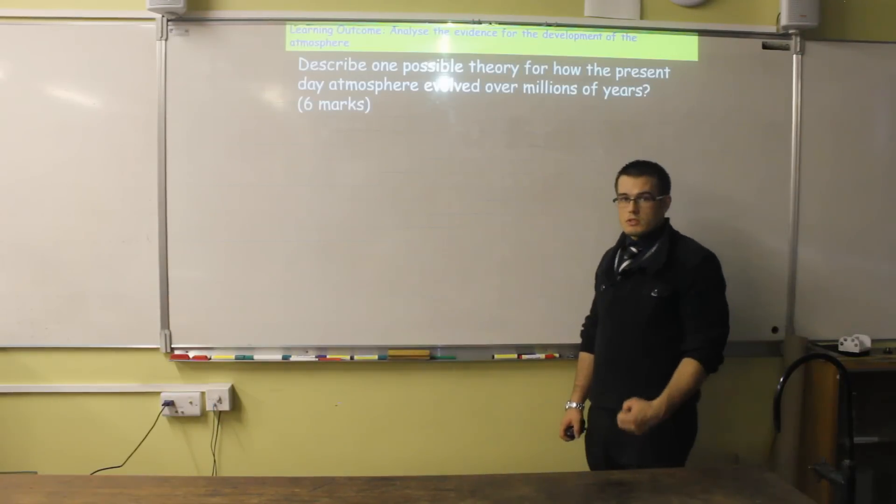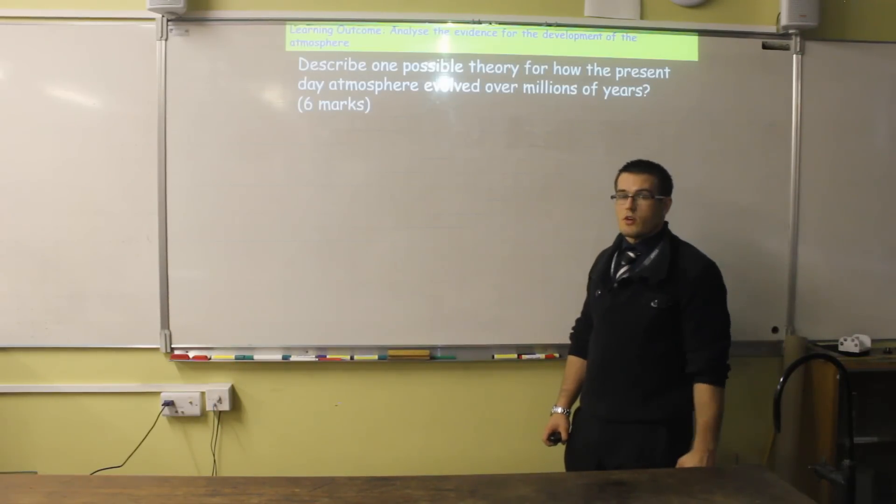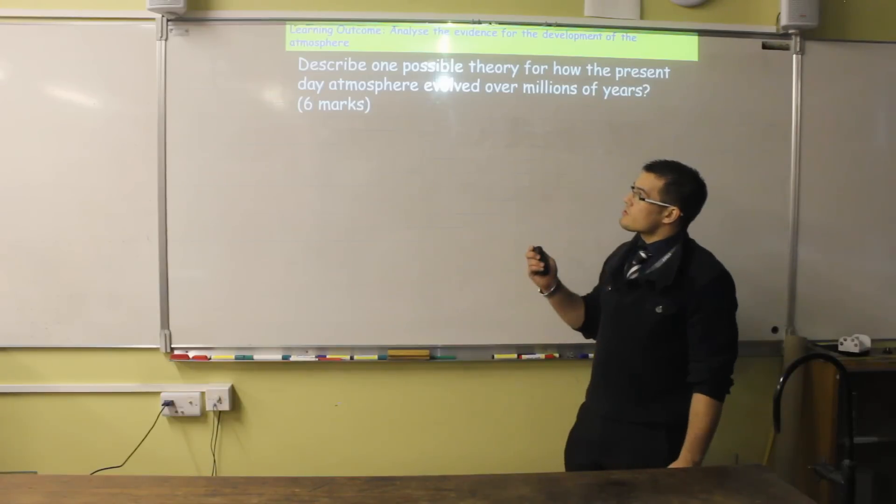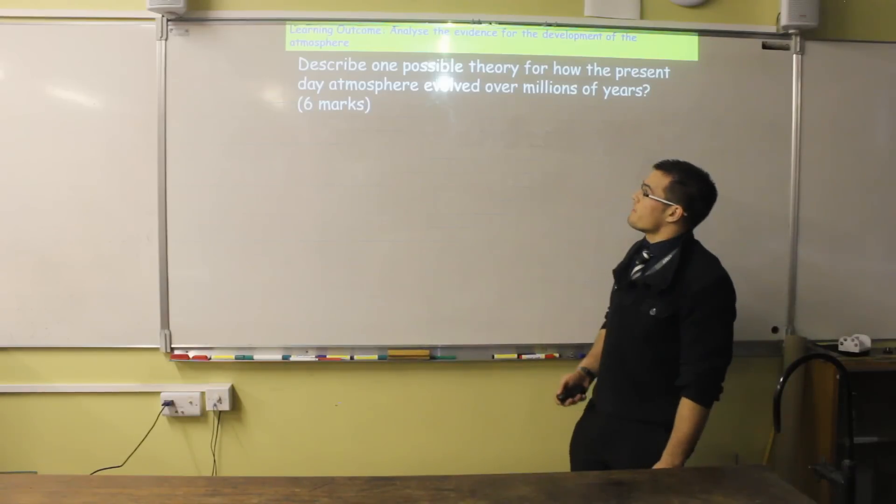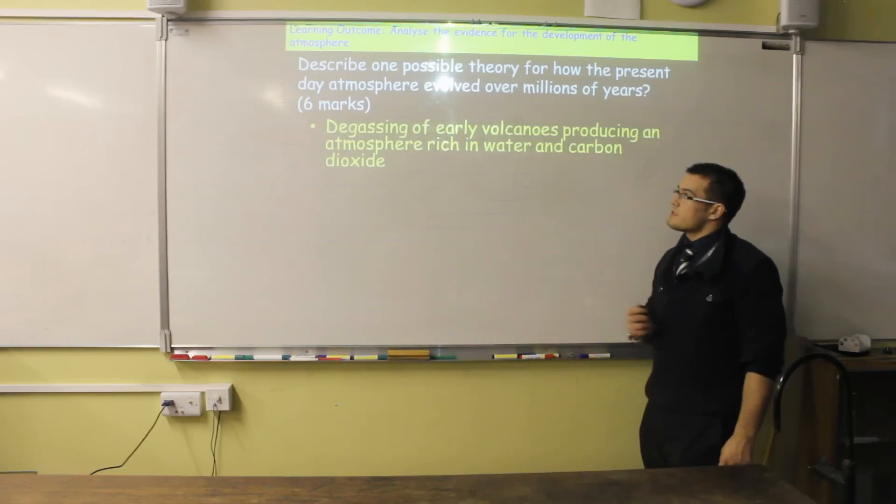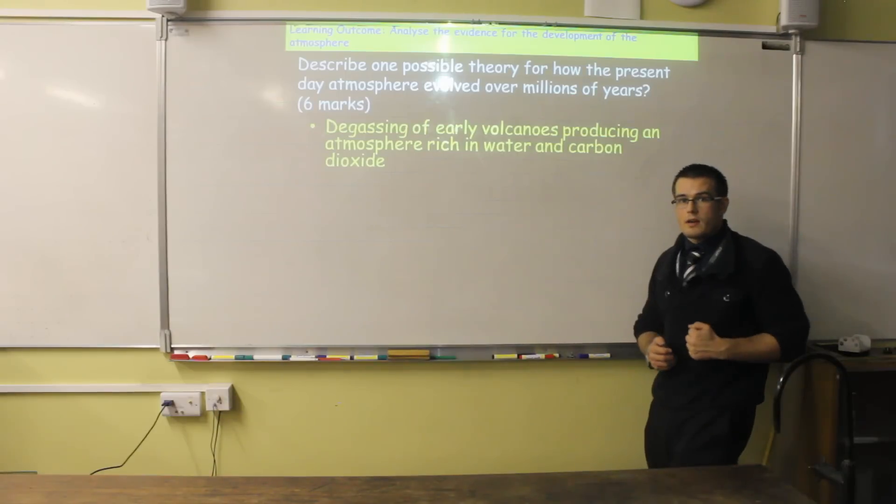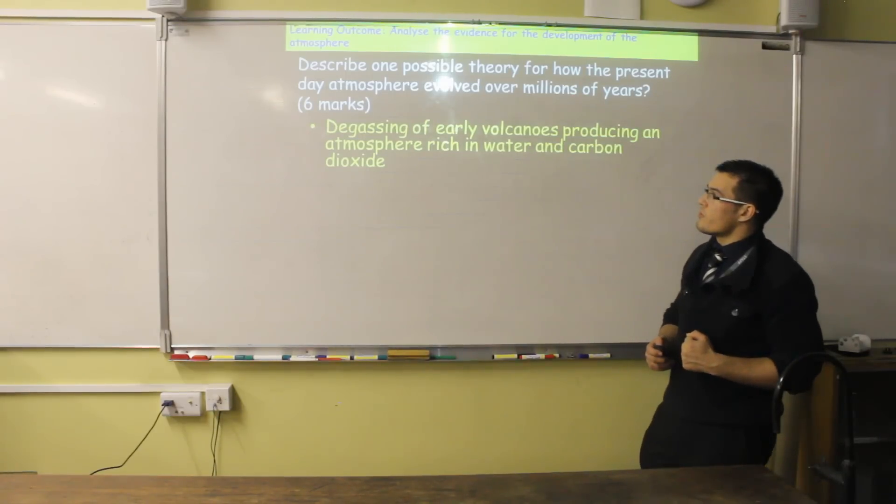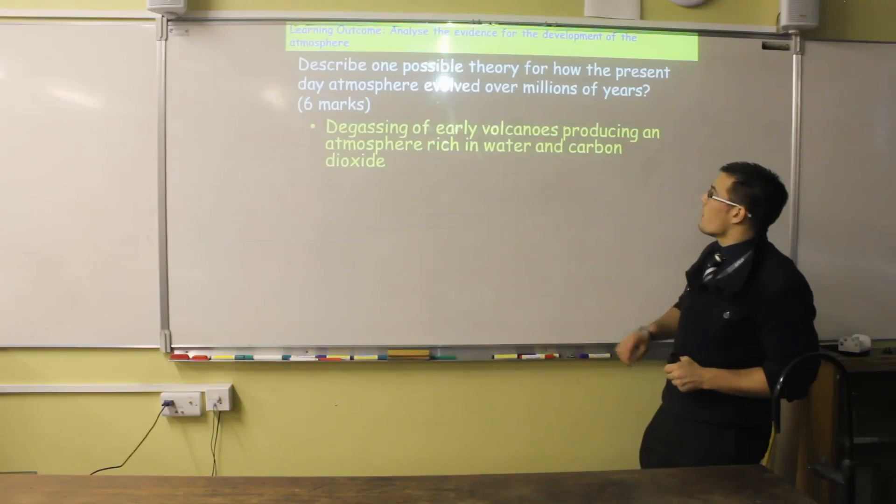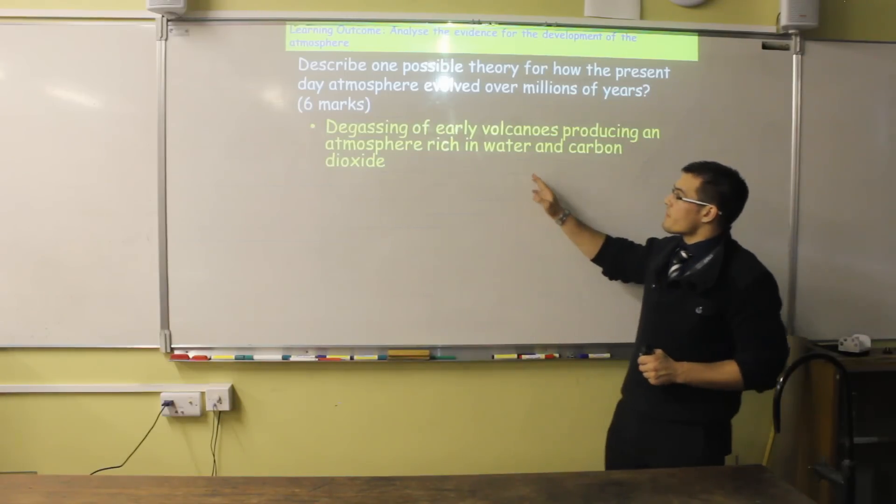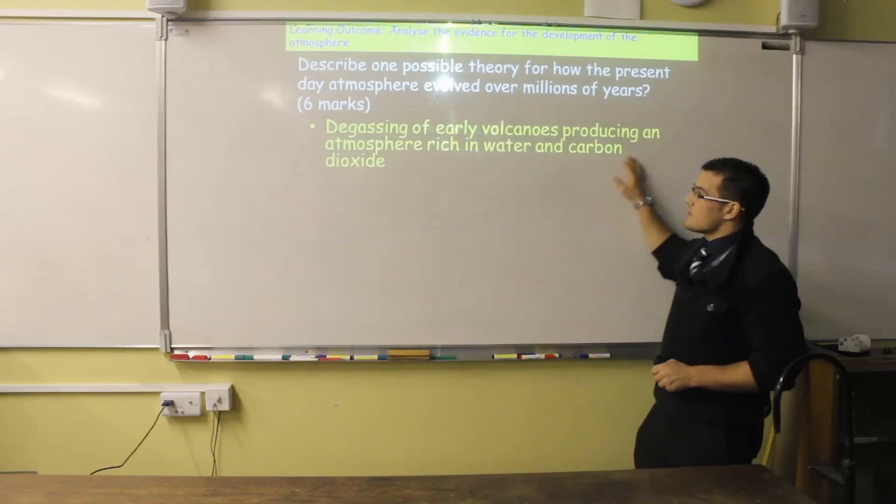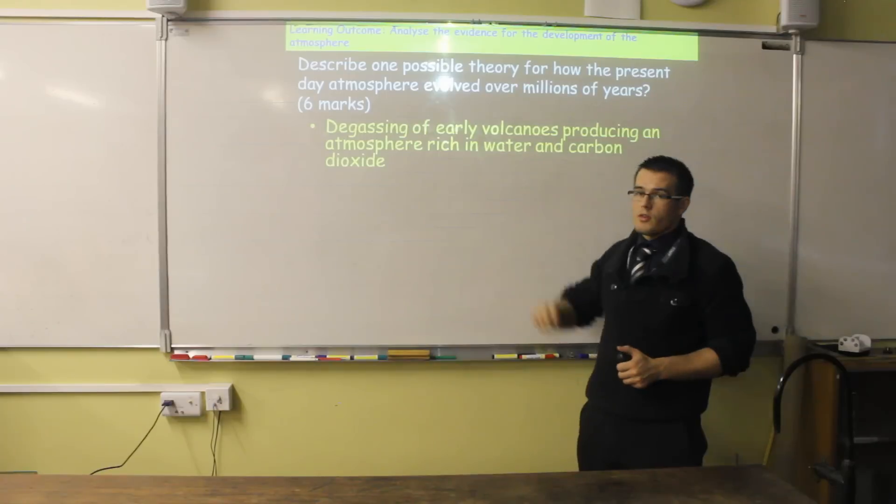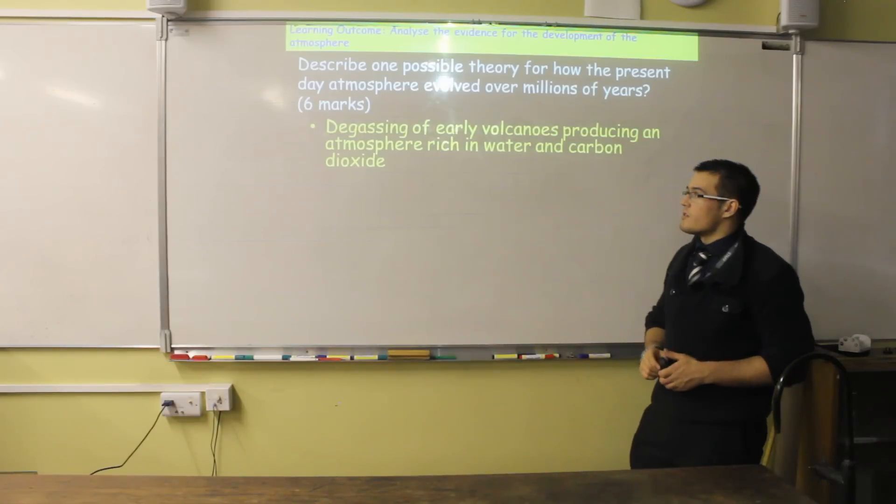This question is a common six mark exam question for this topic. It describes how the atmosphere has changed since its early beginnings to the present day. If we wanted to answer this, first we need to start right back when the Earth was still forming. At that point, our atmosphere consisted mainly of carbon dioxide, with water vapour as a gas, and ammonia and methane. And these gases were given out by volcanoes, so they came from inside the Earth.